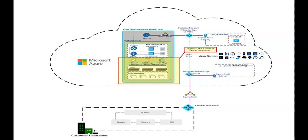We also need to define VMware HCX network segments. VMware HCX is an application mobility platform that simplifies application migration, workload rebalancing, and business continuity across data centers and clouds. We can migrate VMware workloads to Azure VMware Solution through various migration types. The VMware HCX connector deploys a subset of virtual appliances requiring multiple IP segments. When creating the network profiles, we need to identify: a management network for VMware HCX on-premises, an uplink network for VMware HCX on-premises, and a vMotion network for VMware HCX on-premises.